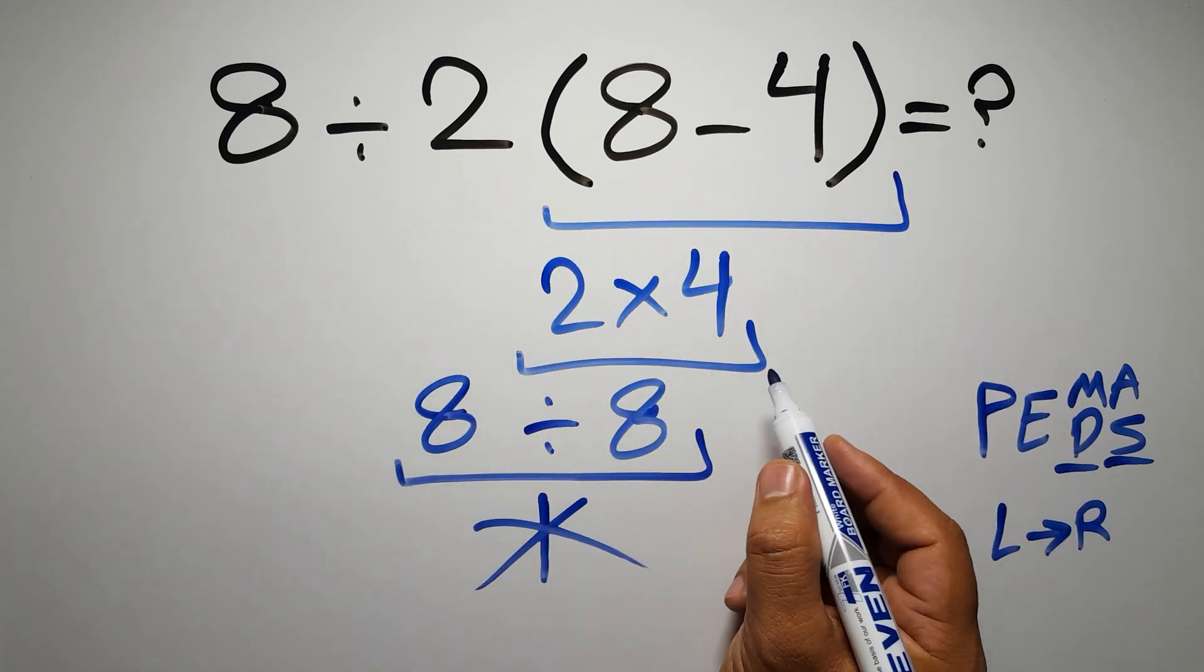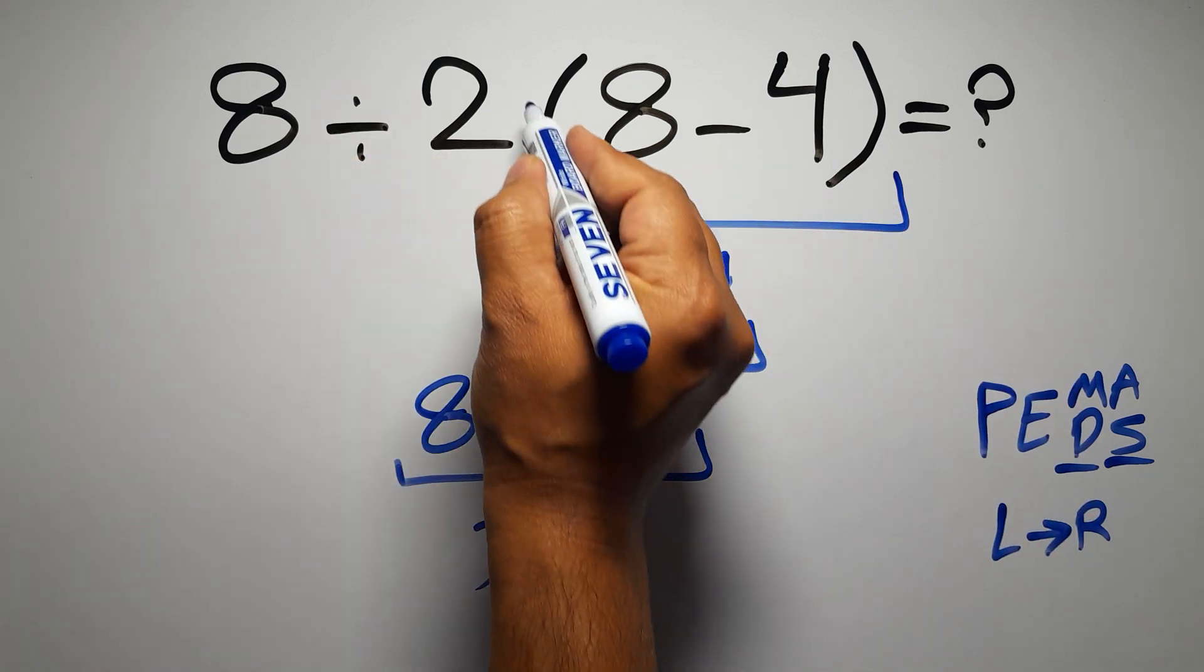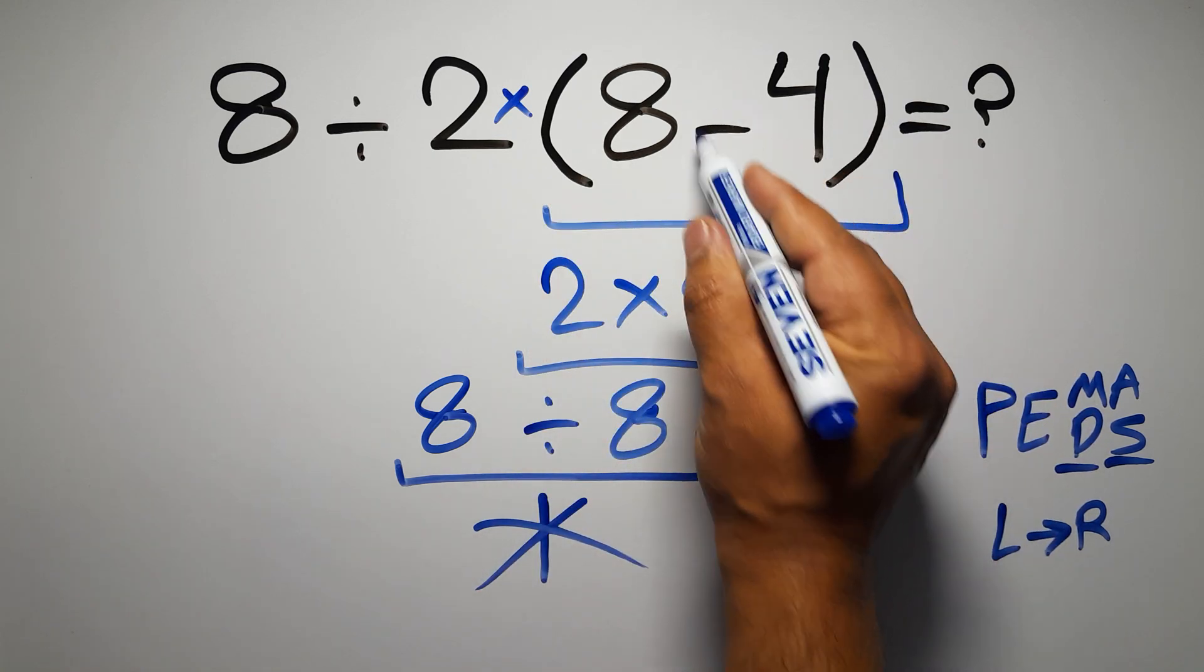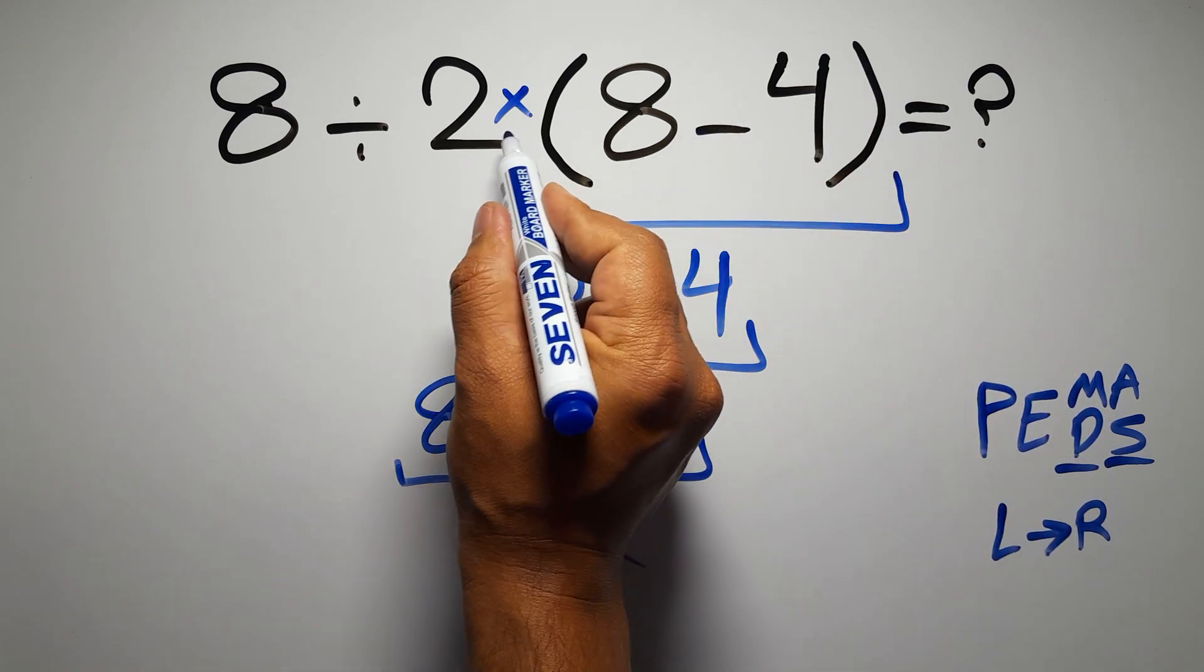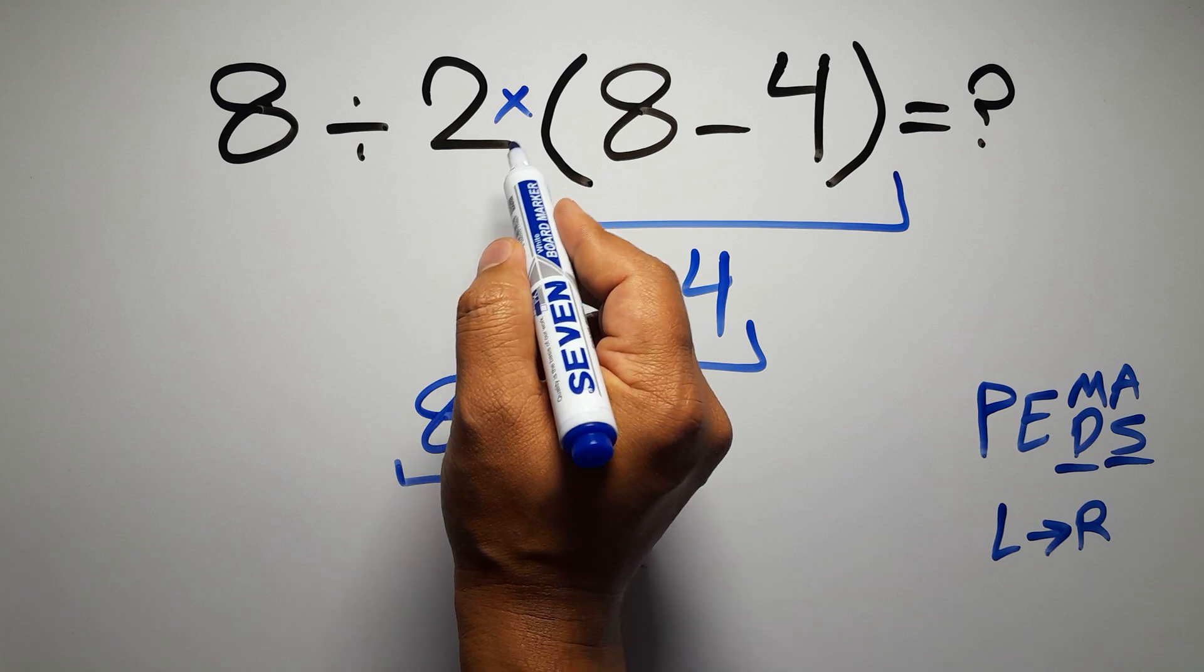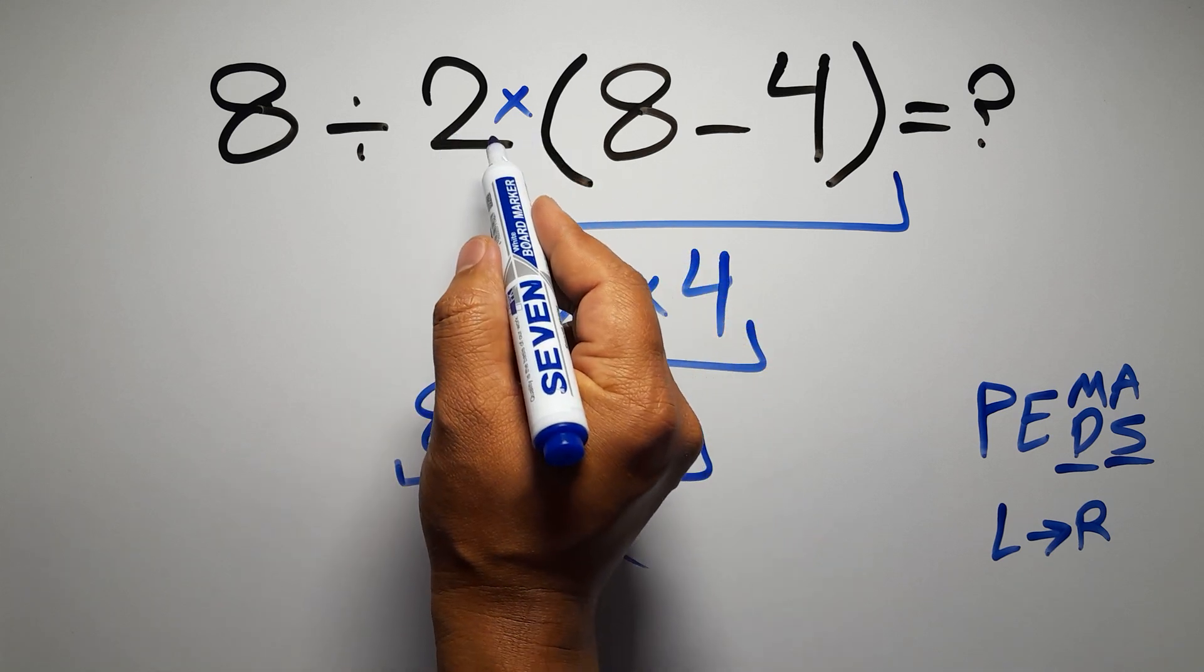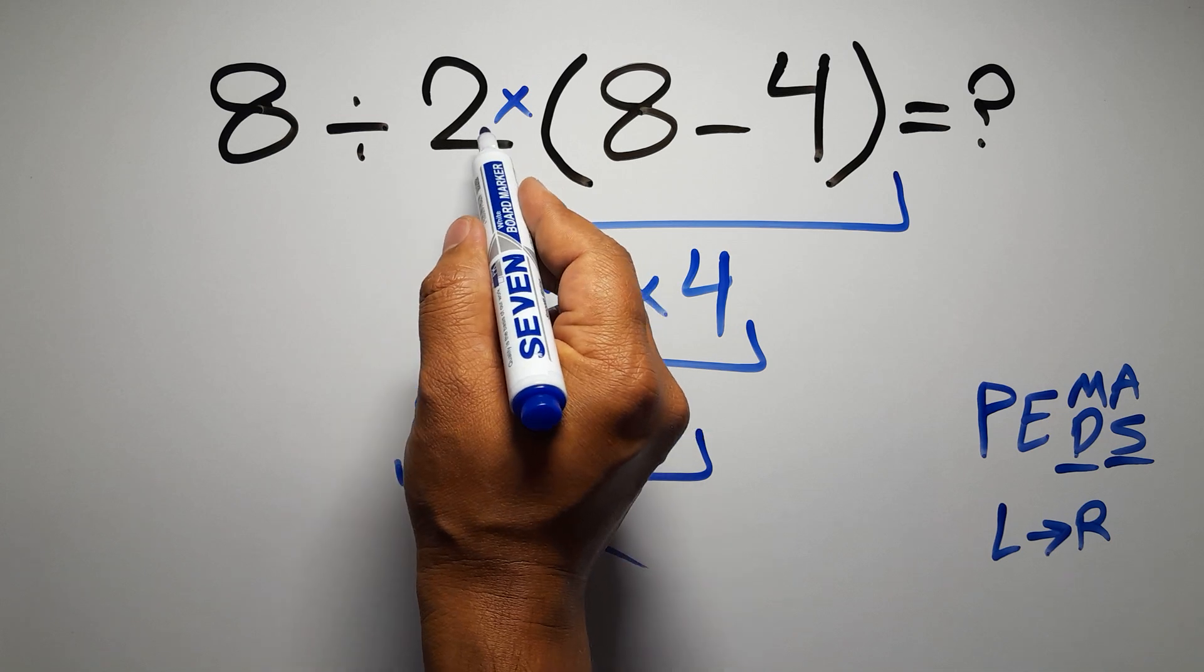In this expression, we have one division, one multiplication, and one parentheses. Inside these parentheses, we have one subtraction. Here we have a multiplication, because in mathematics, when a number is placed next to parentheses, it means multiplication, and we usually don't write the multiplication sign for brevity.